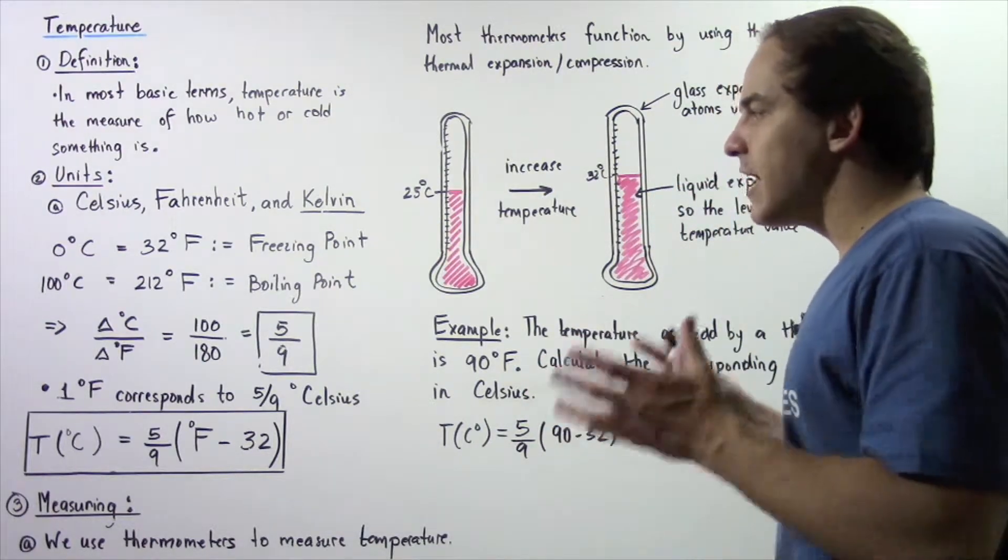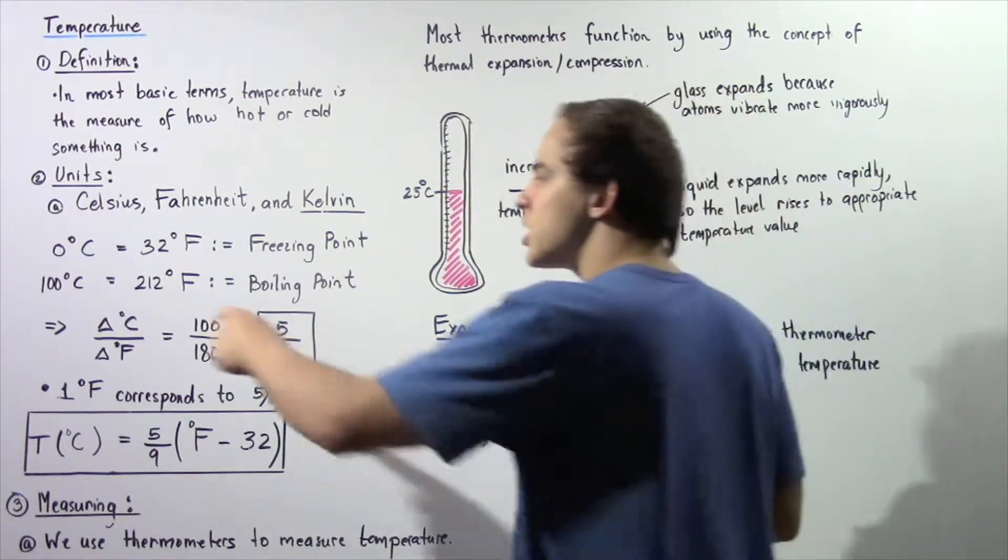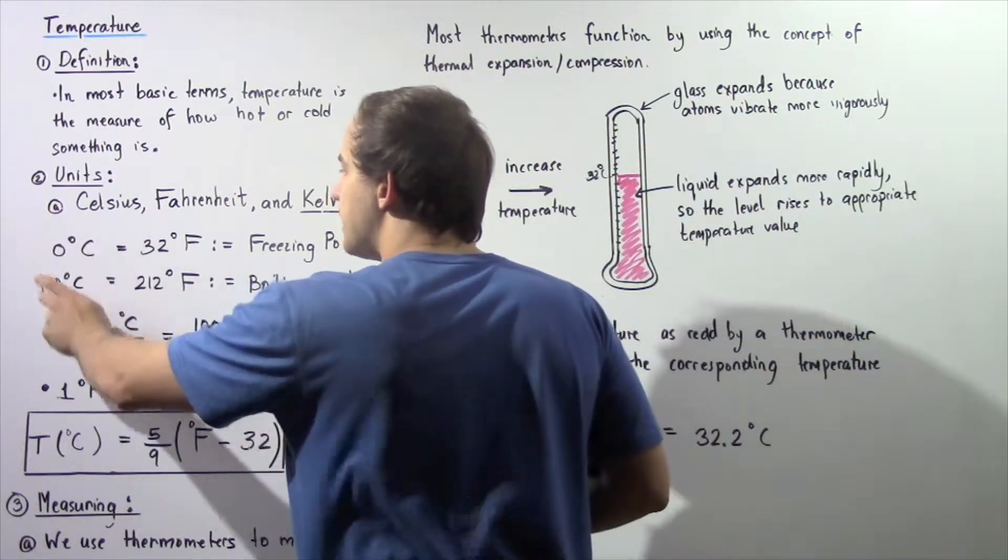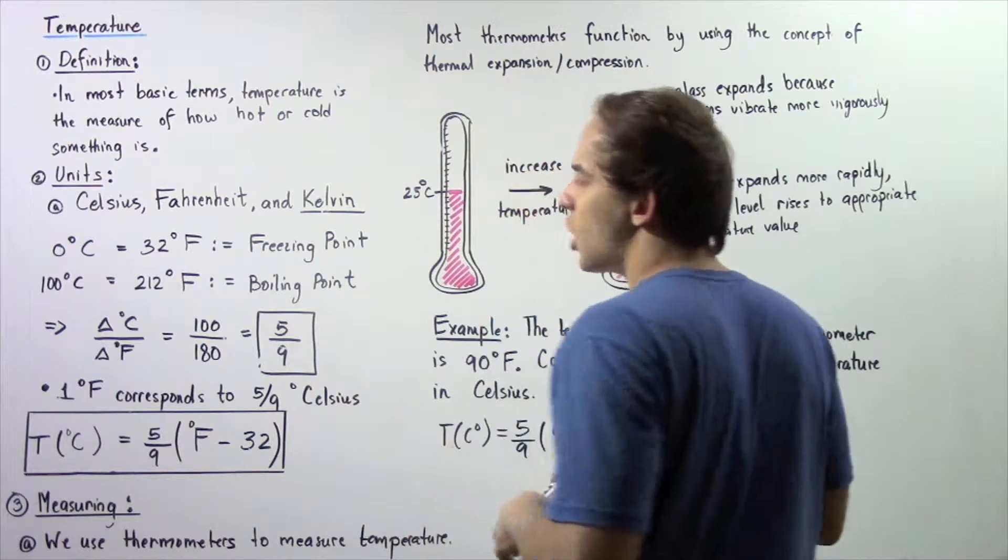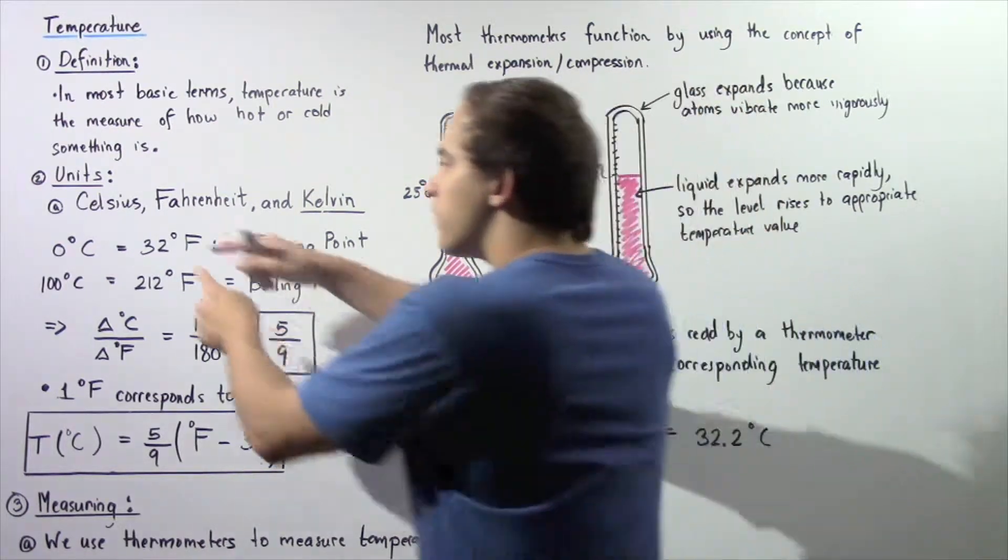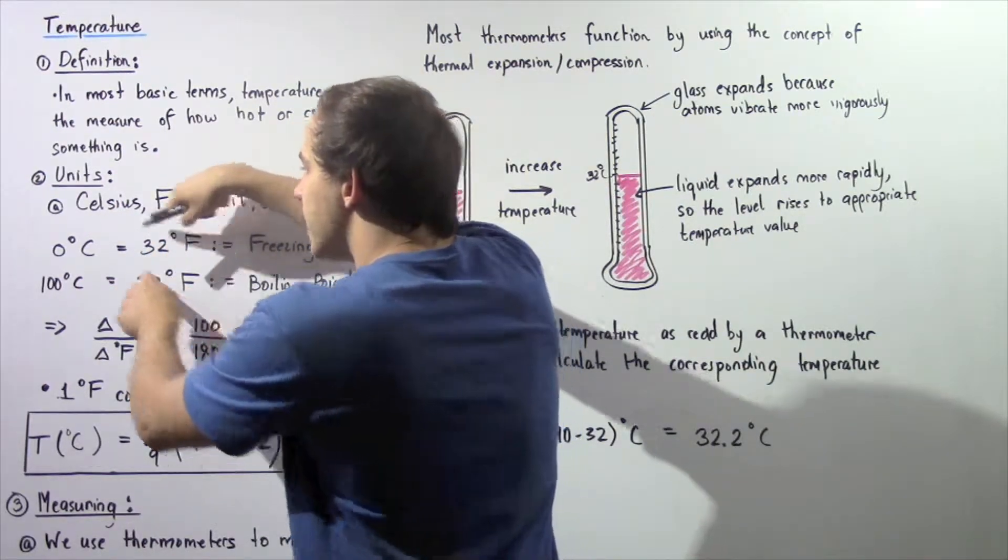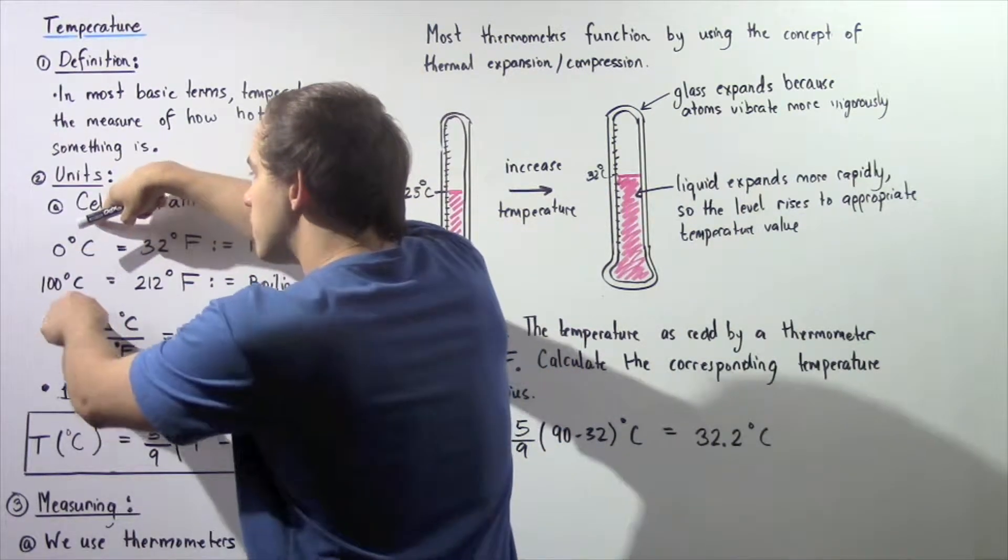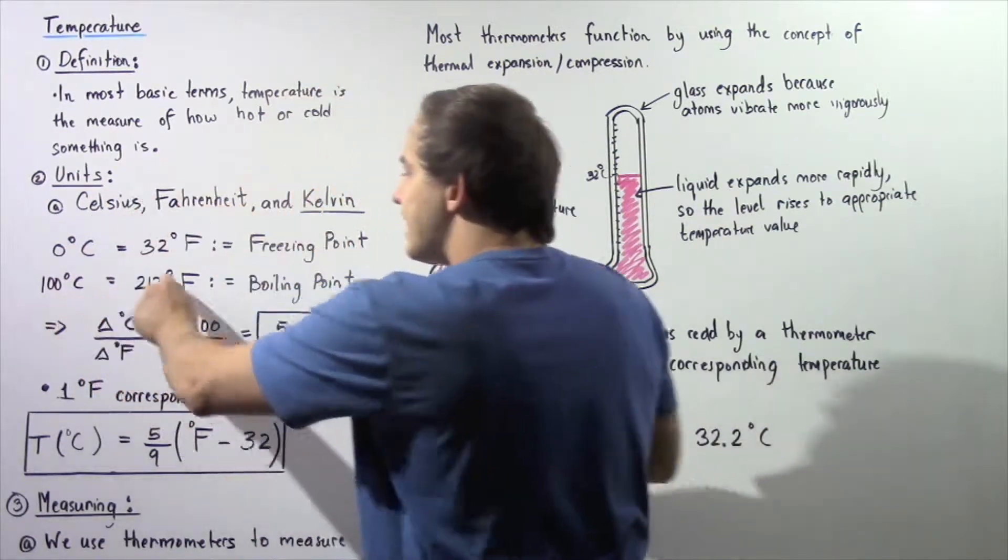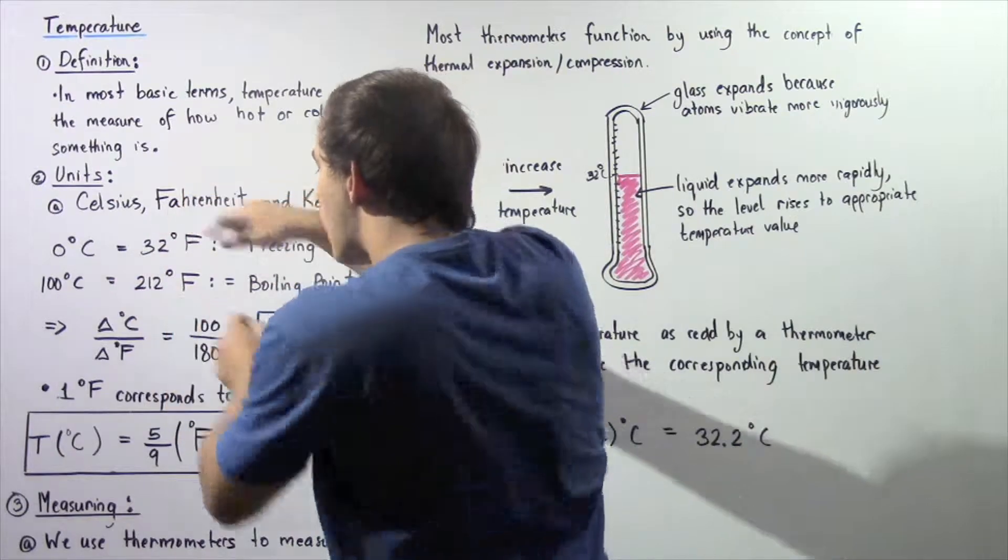So if we want to develop a relationship between Celsius and Fahrenheit, we can use the range values of these four values as shown. We essentially want to find the ratio of the change in Celsius to the change in Fahrenheit.